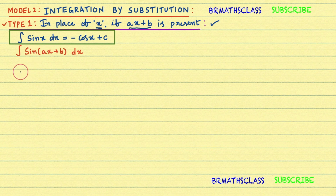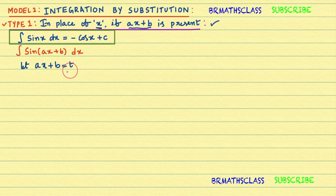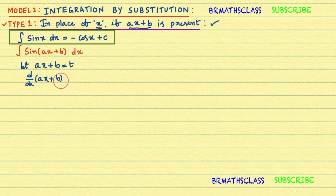To do this by substitution method, first I'll take ax plus b equal to t. Let ax plus b equal to t. After taking some expression as t, we differentiate that expression with respect to x on both sides — d/dx of (ax plus b) equal to d/dx of t.